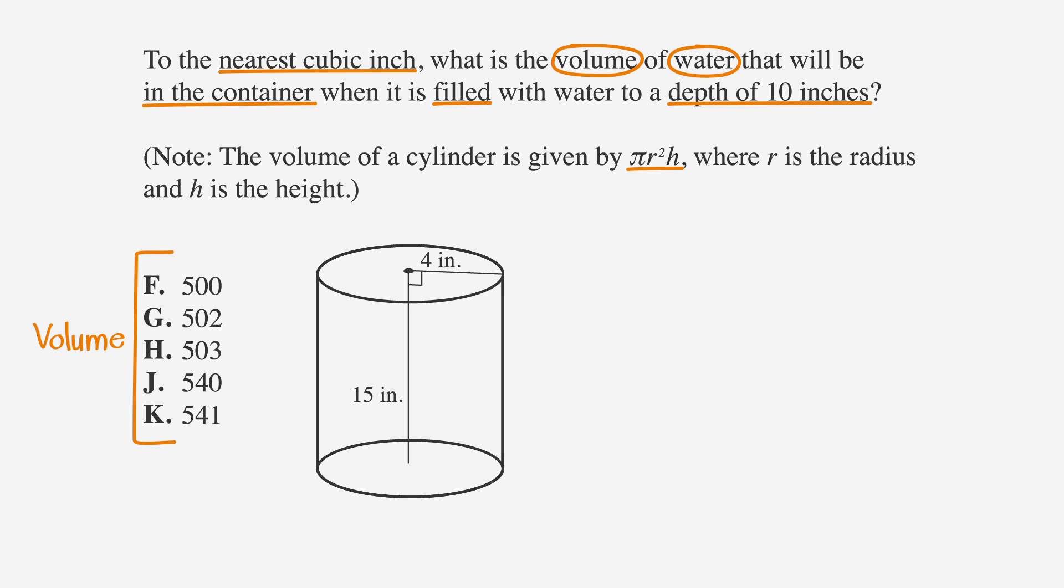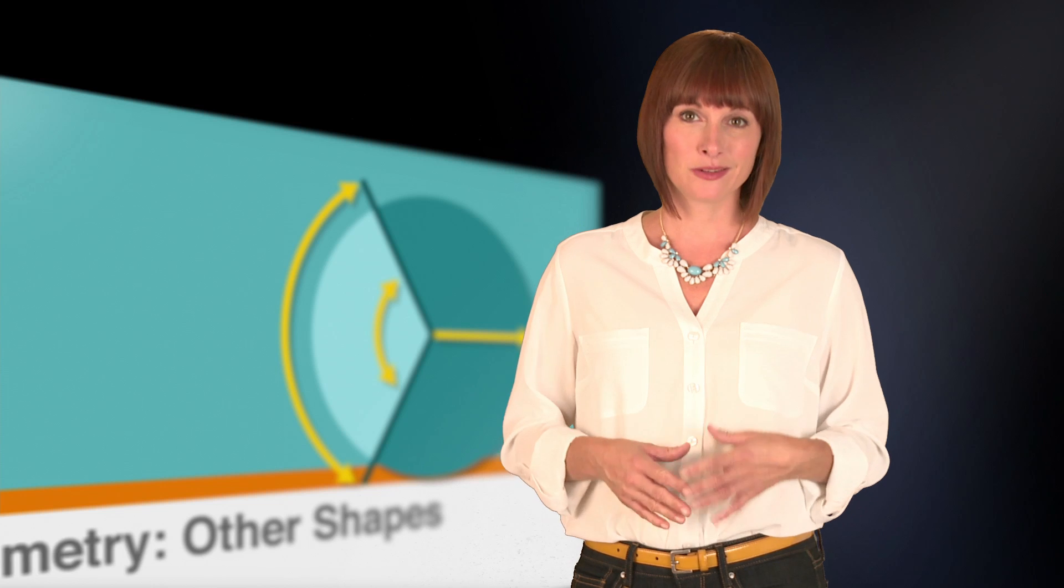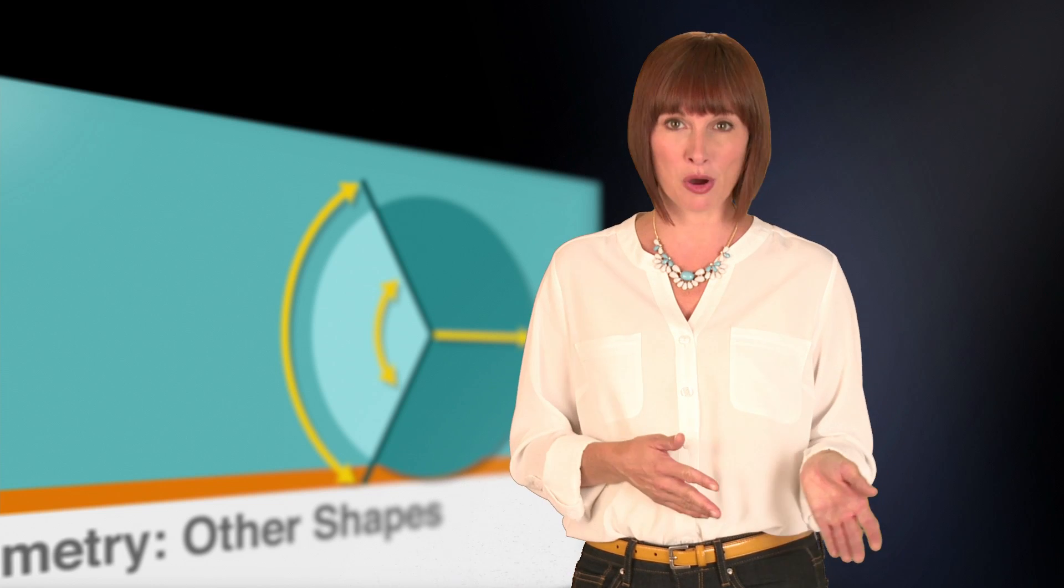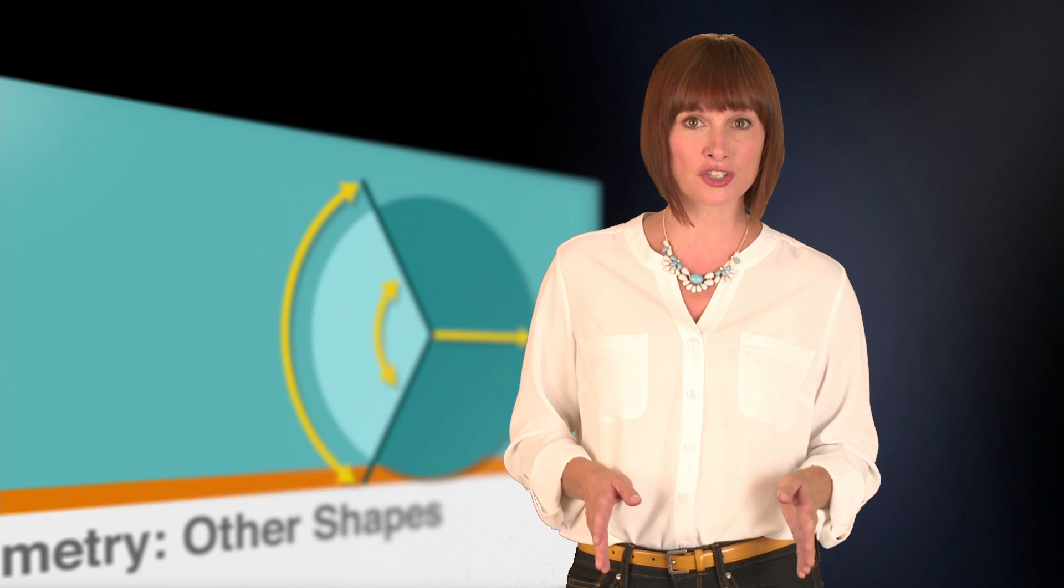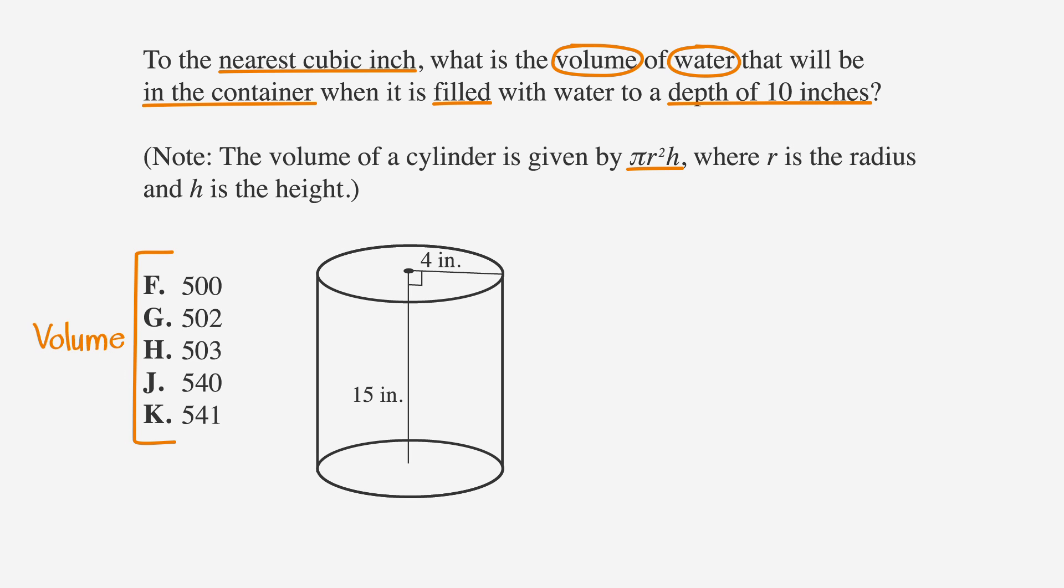The answer choices represent the volume of water. Normally, it would be tempting to skim over a note, but on the ACT math section, any notes given at the bottom of a question are really important to read. In this note, we're given the formula for the volume of a right circular cylinder, pi r squared h, so let's write that down. To find the volume of water in the container, we need to use the height of the water, which is ten.